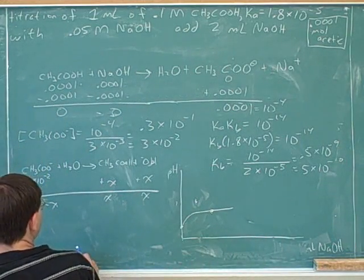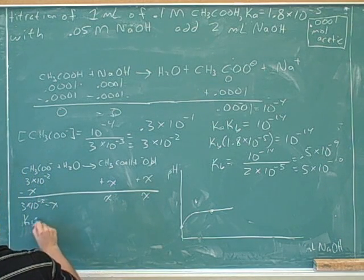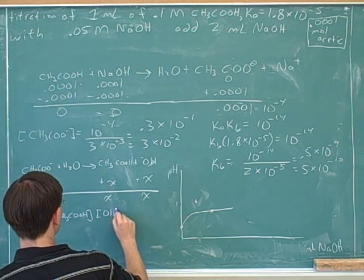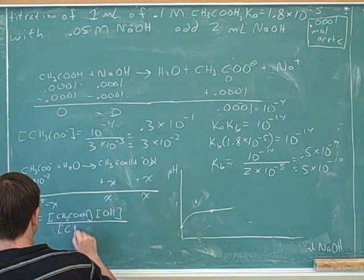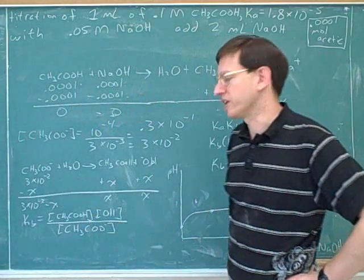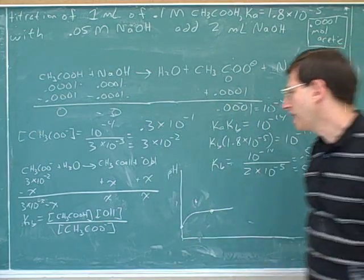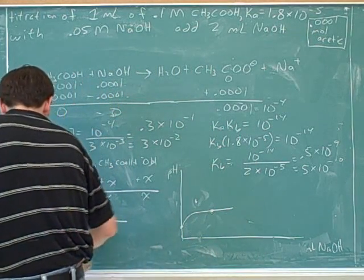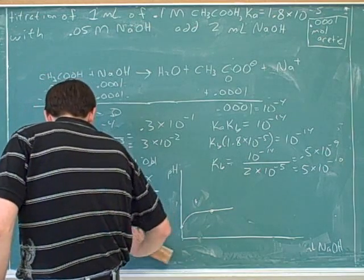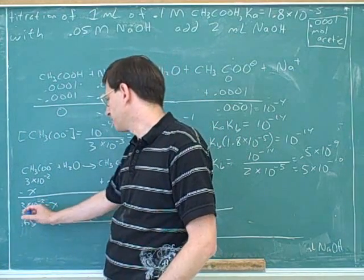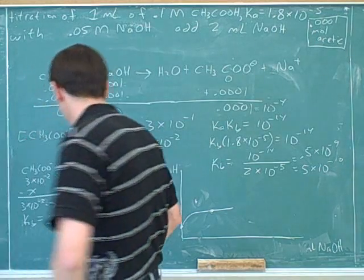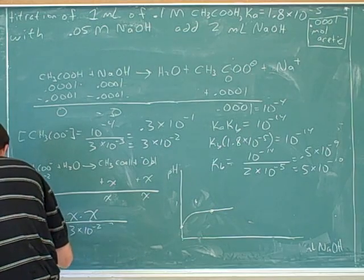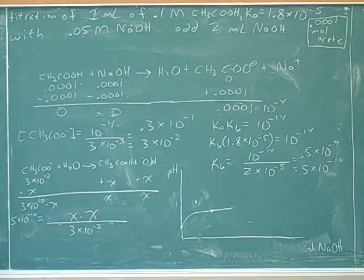So then over here we would end up with... we set up our standard equilibrium expression with the products on the top and the starting material on the bottom. And we know from our start-change-end table that we're going to have concentrations of x and x of our products. We'll use our standard approximation. To make this simpler, we'll just call it 3 times 10 to the negative 2, because we know we're not expecting to use the quadratic formula. And we already figured out our KB, 5 times 10 to the negative 10.